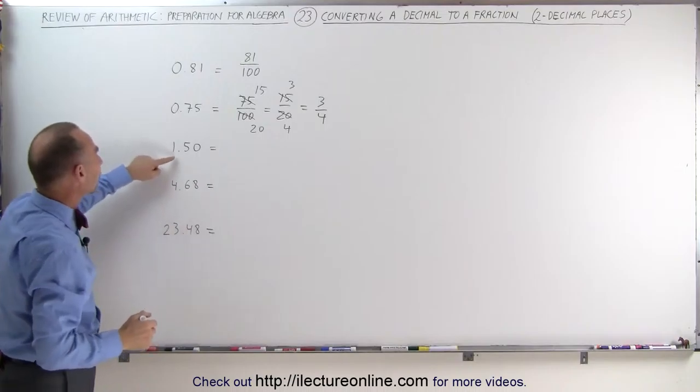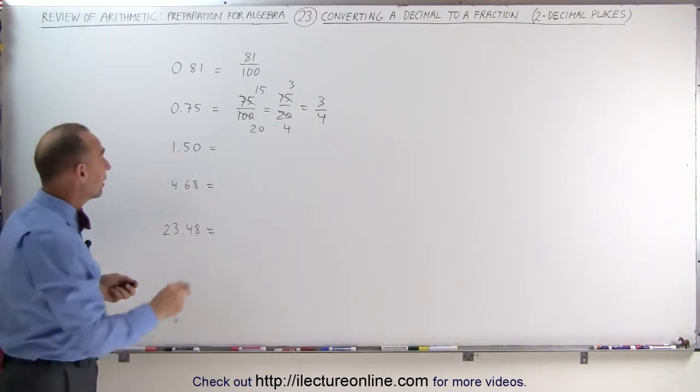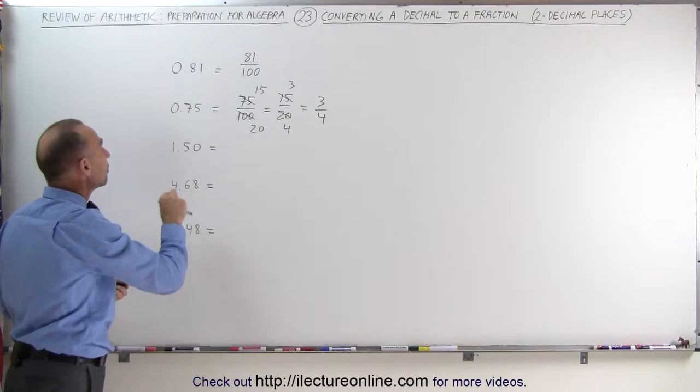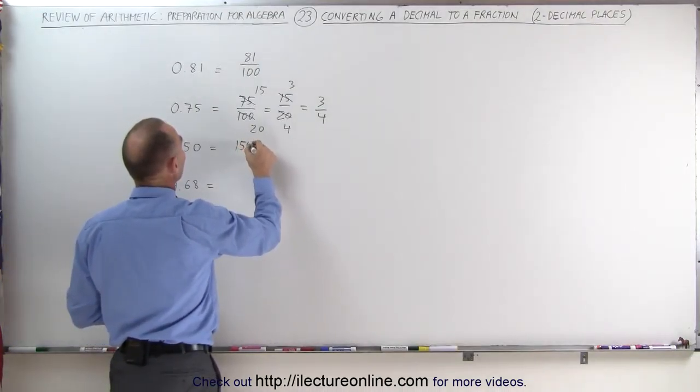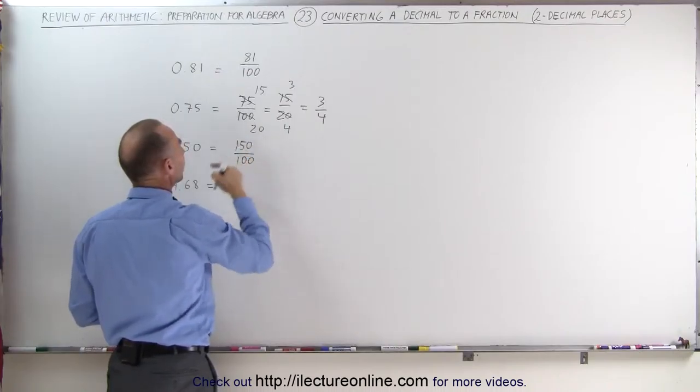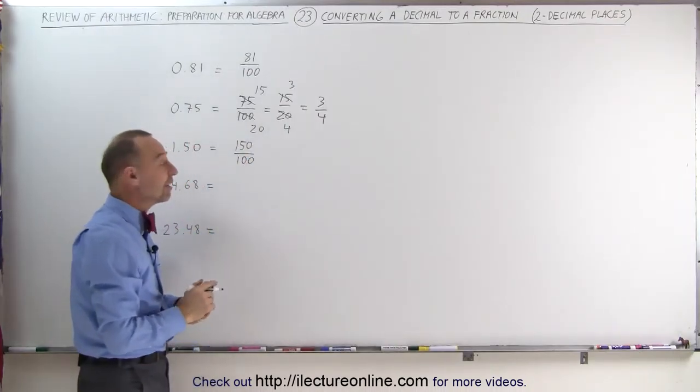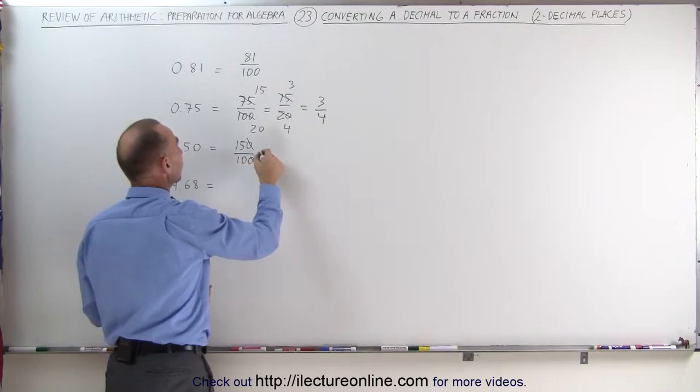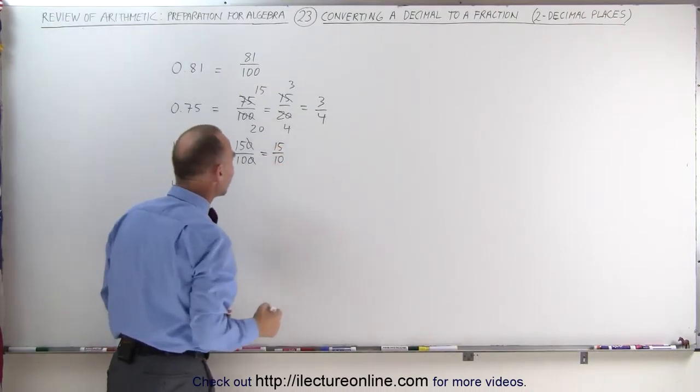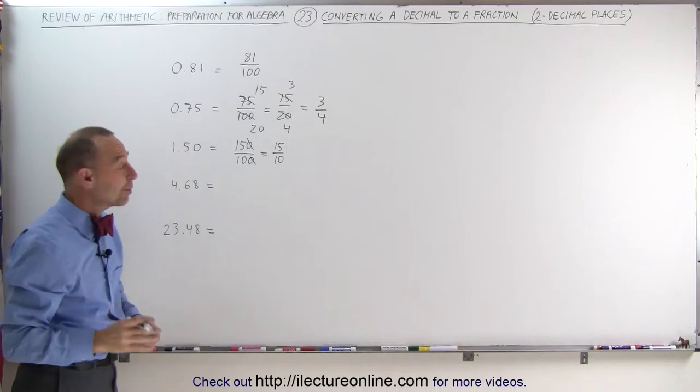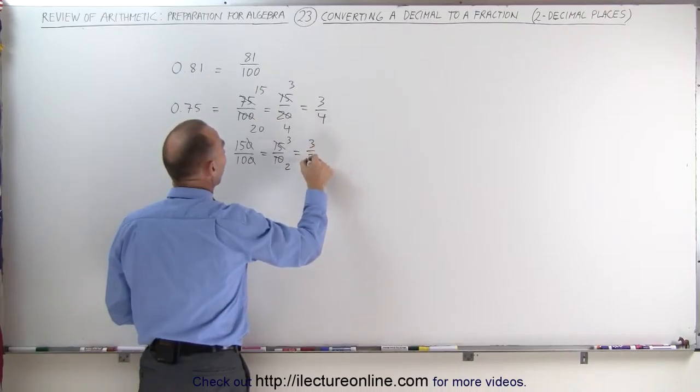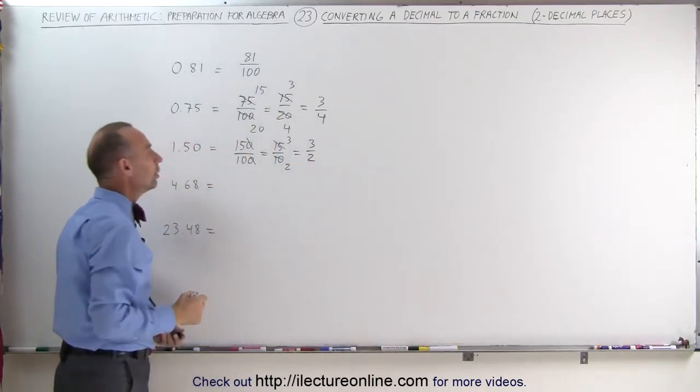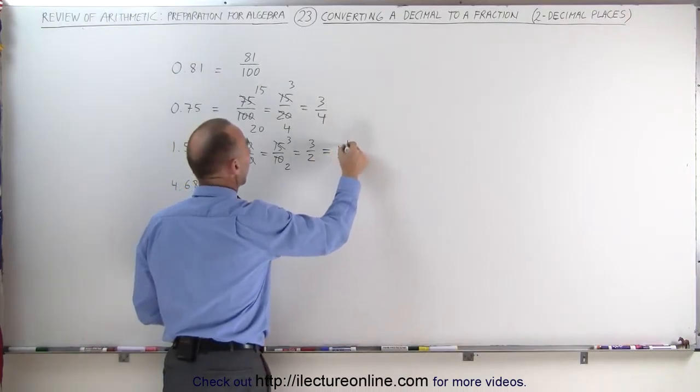What if we get a number like 1.50? No difference. If it's two decimal places, you remove the decimal and divide by 100. This becomes 150 divided by 100. Notice that both the numerator and the denominator can be divided by 10. This gives you 15 divided by 10 as an improper fraction. We can still simplify it. Both are divisible by 5. This becomes 3 and this becomes 2. So we can write this as 3 over 2, or we can write it as 1 and 1 half.